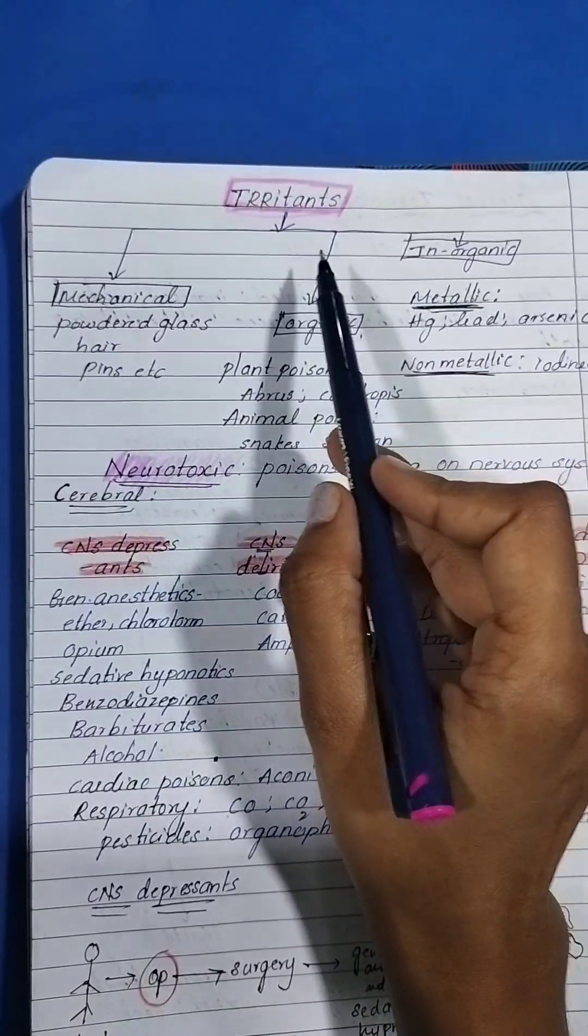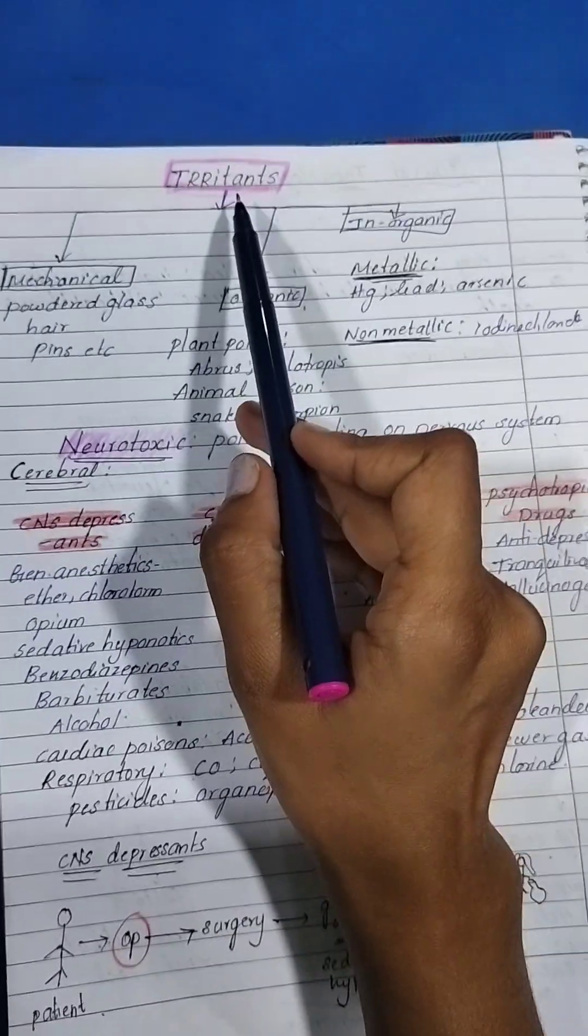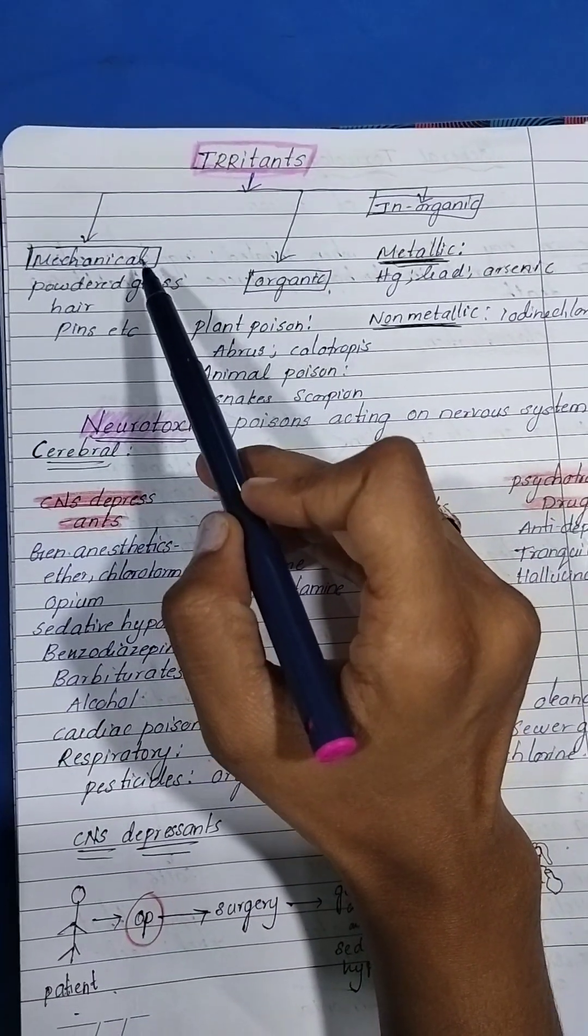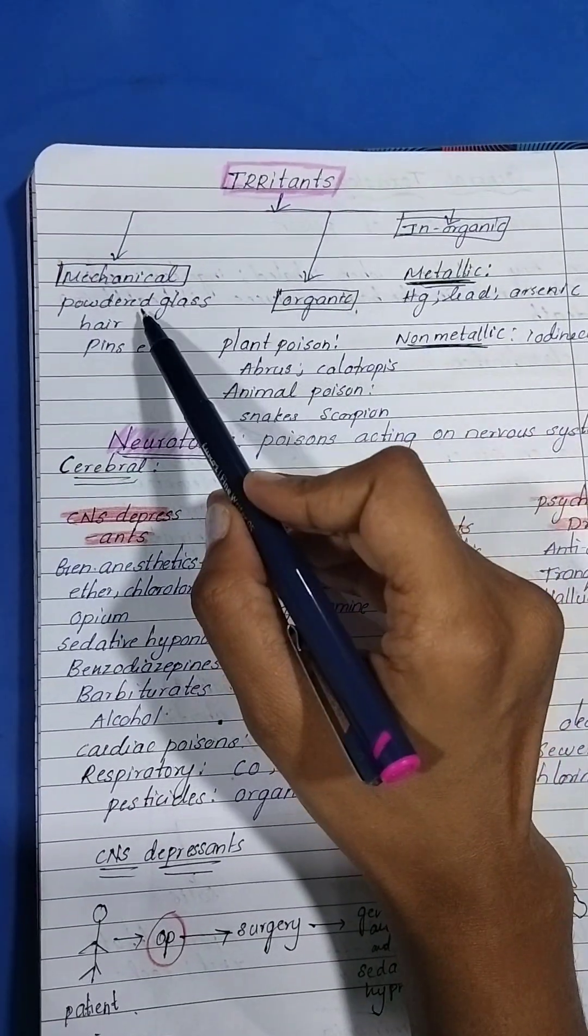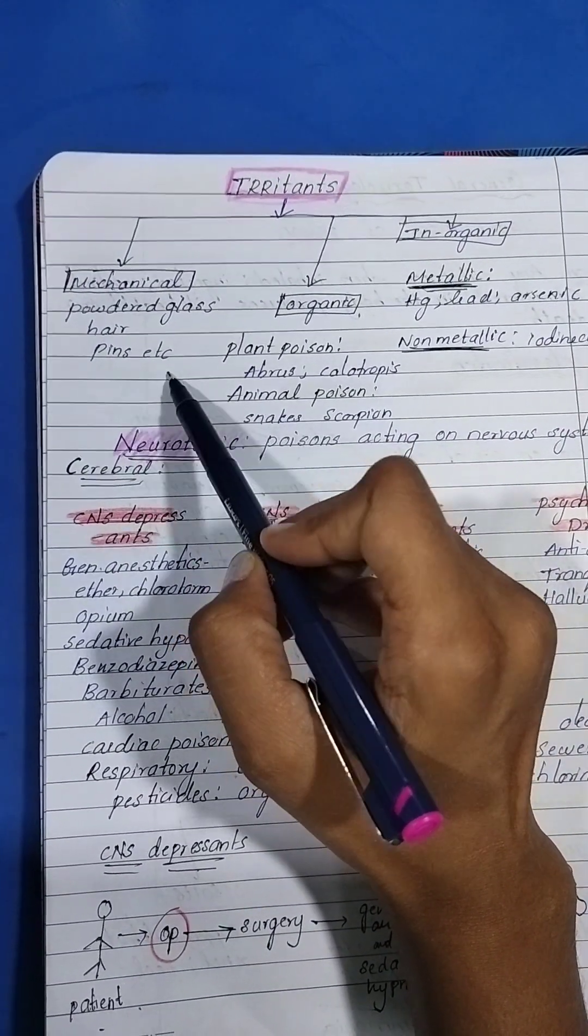Irritants are classified as mechanical, organic, and inorganic. Mechanical are like powdered glass, hair pins, etc. Organic includes plant poisons and animal poisons.